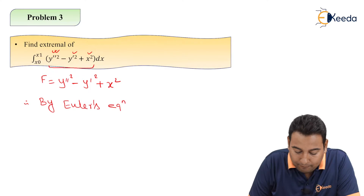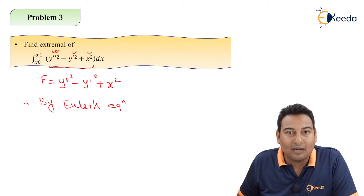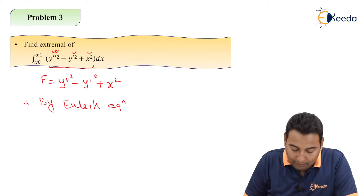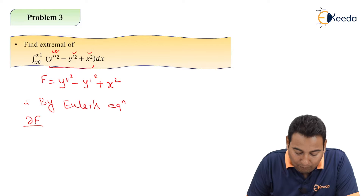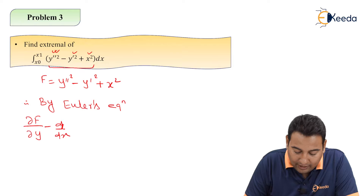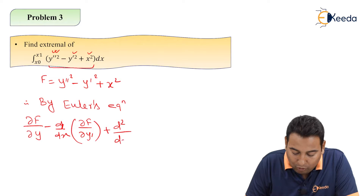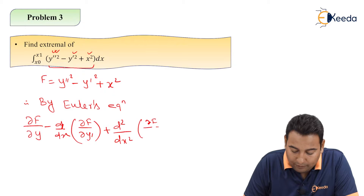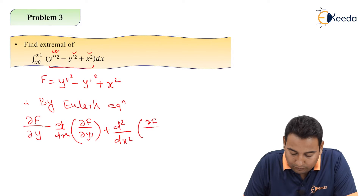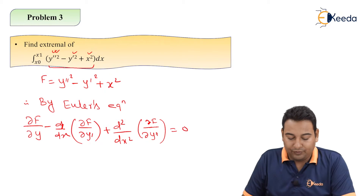Therefore, by Euler's equation, since the maximum power is y double dash, we need to go up to y double dash. The equation is: ∂f/∂y minus d/dx of ∂f/∂y′ plus d²/dx² of ∂f/∂y″ equals zero.